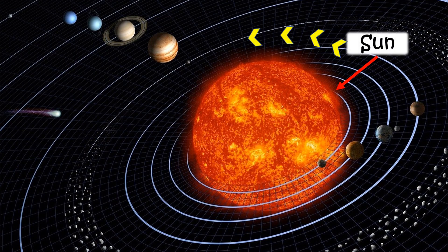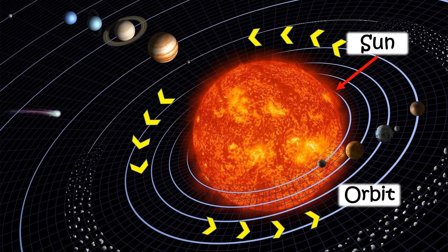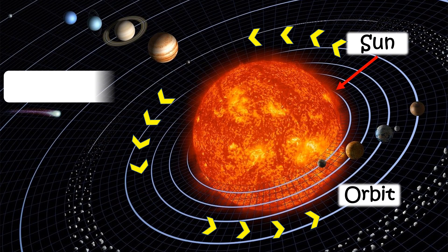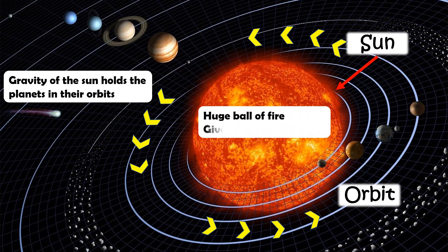All eight planets revolve, or go around the Sun in a fixed path, called orbit. The force of attraction, that is, the gravity of the Sun, holds the planets in their orbits. The Sun is a huge ball of fire, it gives out heat and light in all directions.